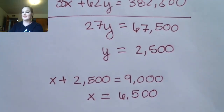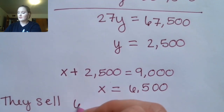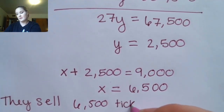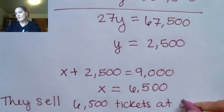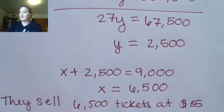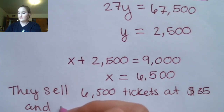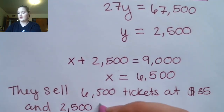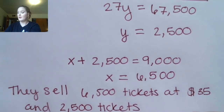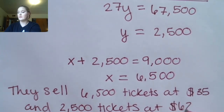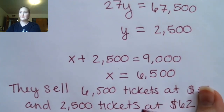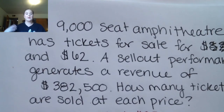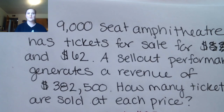They sell 6,500 tickets at $35 and 2,500 tickets at $62. I hope this section gave you a little bit of review about substitution and combinations, and also showed you some word problems using these methods. I'll see you guys soon.